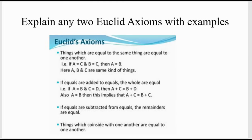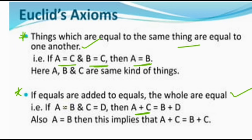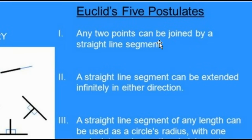Explain any two Euclid axioms with examples. Euclid axioms are important — you must compulsorily write two. First axiom: The things which are equal to the same thing are equal to one another. Example: if A equals C and B equals C, then A equals B. Second axiom: If equals are added to equals, the wholes are equal. So if A equals B and C equals D, then A plus C equals B plus D. For Euclid postulates: any two points can be joined by a straight line segment. A straight line can be extended infinitely in both directions.